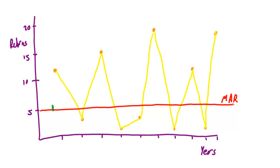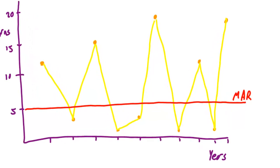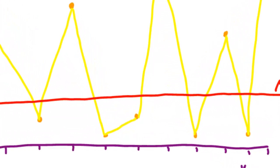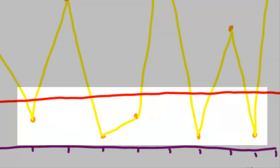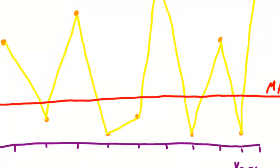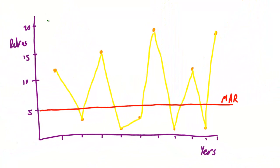But as potential investors, surely we're happy with these huge high performances, even though they're quite erratic. What we really care about is how much those points move about below the line of minimum acceptable return, and we want that deviation to be as low as possible.